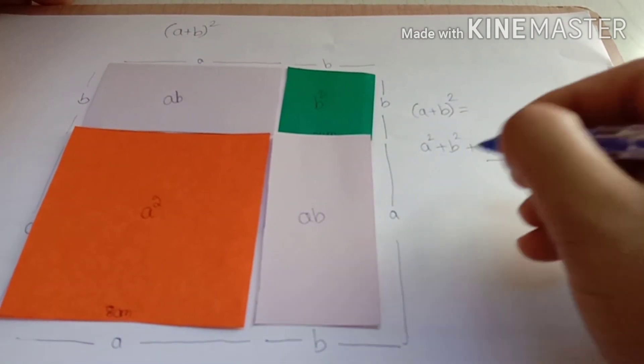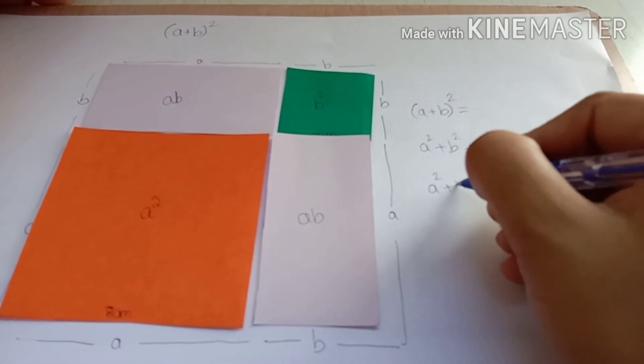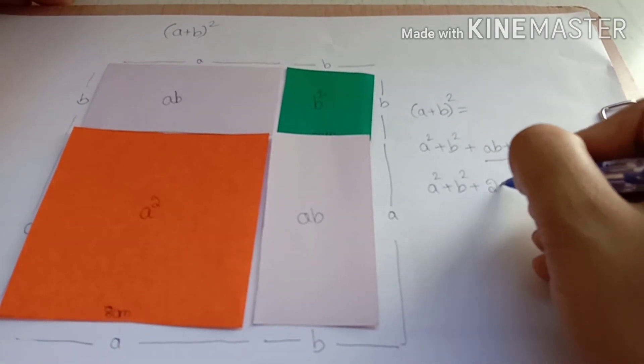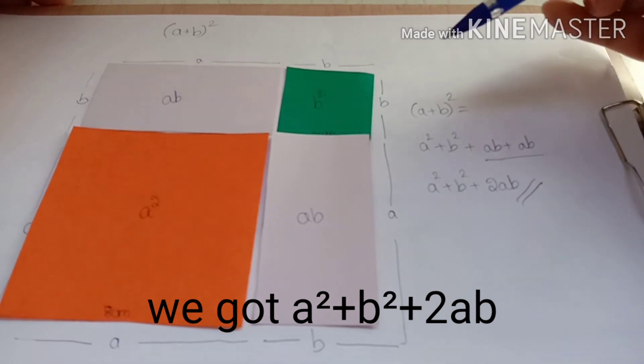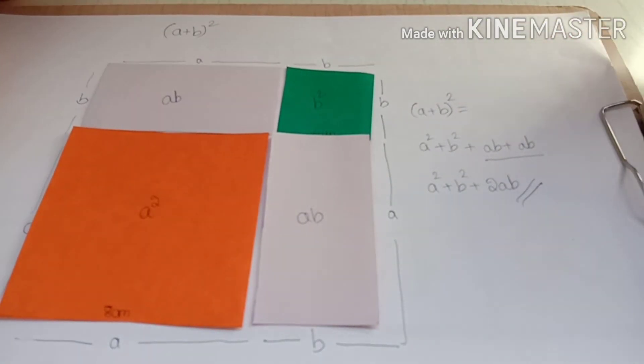Now I am going to add the like terms, then you will get a² plus b² plus 2ab. This is the identity of (a+b)² and this is how we can experimentally prove the identity (a+b)².